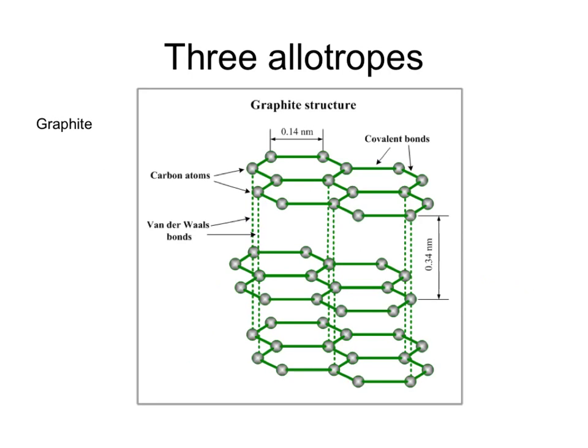Graphite also has a giant structure where the carbon atoms are arranged in hexagonal layers, but the layers are only held to each other by very weak attractions.